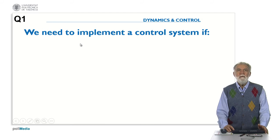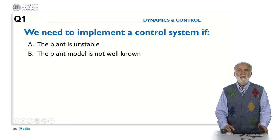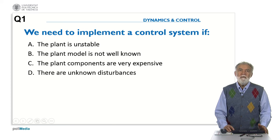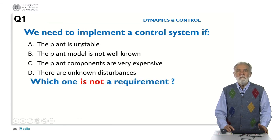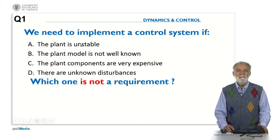Let's go to the first question. We need to implement a control system if the plant is unstable, or the plant model is not well known, or the plant components are very expensive, or there are unknown disturbances. The question is: which one is not a requirement? Please think about that and we will go for the correct answer.